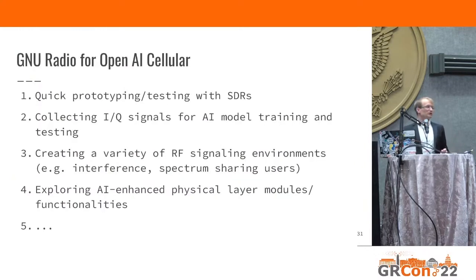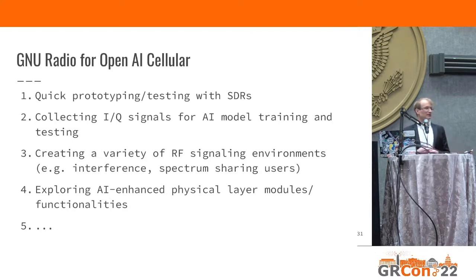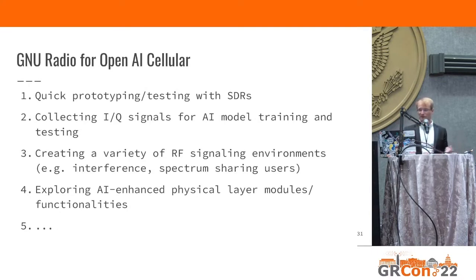More use cases for GNU radio: it's a fantastic tool for quick prototyping and testing with SDRs. For our project, we envision using it to collect IQ samples for AI model training and testing. We also want to use GNU radio to create a variety of RF signaling environments — future next-generation networks may operate in unlicensed or shared spectrum. We can use GNU radio to create signals of other users that need to coexist in a band and see how the X-app or RAN adapts. We can also create interference for security research, and explore AI-enhanced physical layer modules in the context of ORAN.